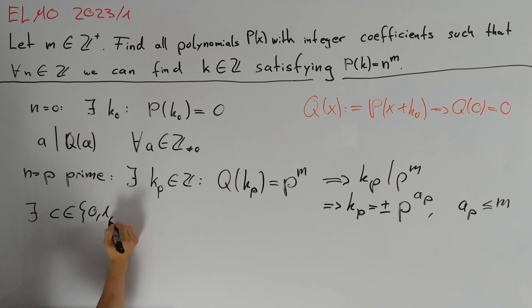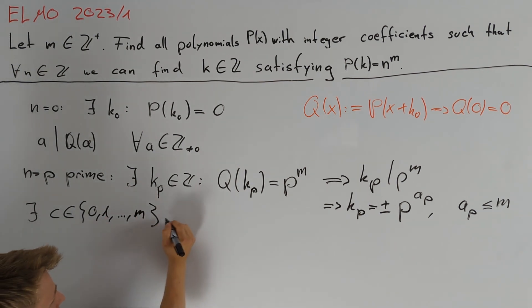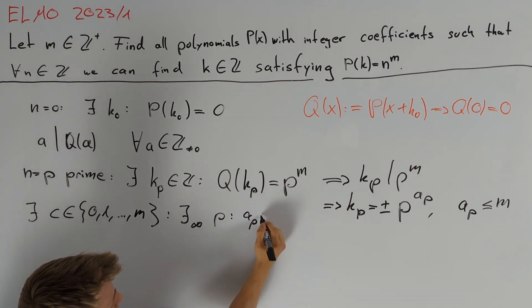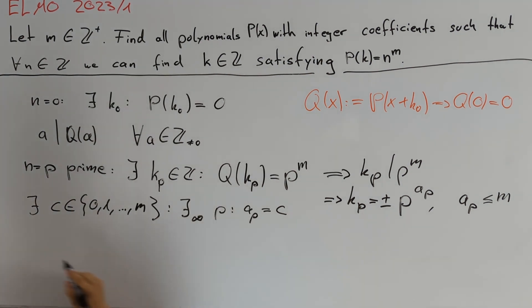So we can write down that there exists some c in the set {0, 1, ..., m} such that there exists infinitely many primes p with aₚ equals c.